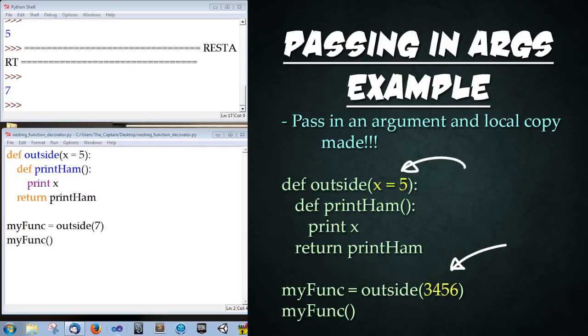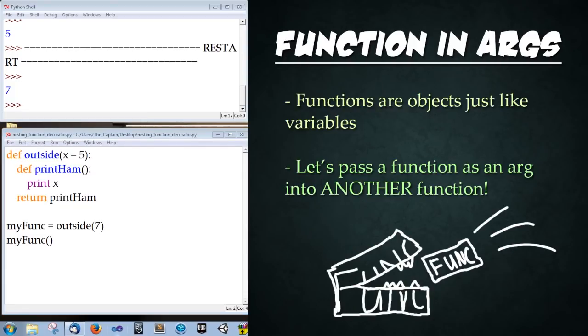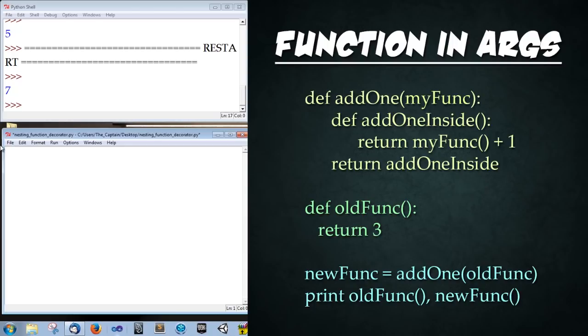Functions are objects. So since we've tried already returning functions so how about we try passing them in as an argument into a function. So passing a function into another function. Let's go ahead and do that. So I'm going to go ahead and select all this stuff and delete it. And then I'm gona create a simple function that just adds one to the result of another function.